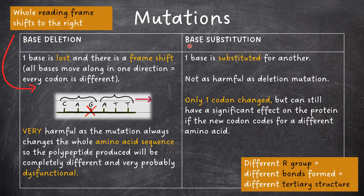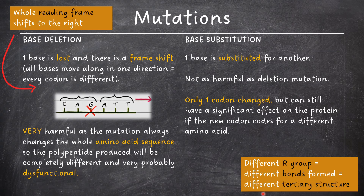In base substitution mutations, one base is substituted for another. They're not as harmful as deletion mutations and only one codon is changed, but this can still have a significant effect on the protein if the new codon codes for a different amino acid. This is because the new amino acid may have a different R group, meaning that different bonds will be formed with other amino acids, resulting in a different tertiary structure.